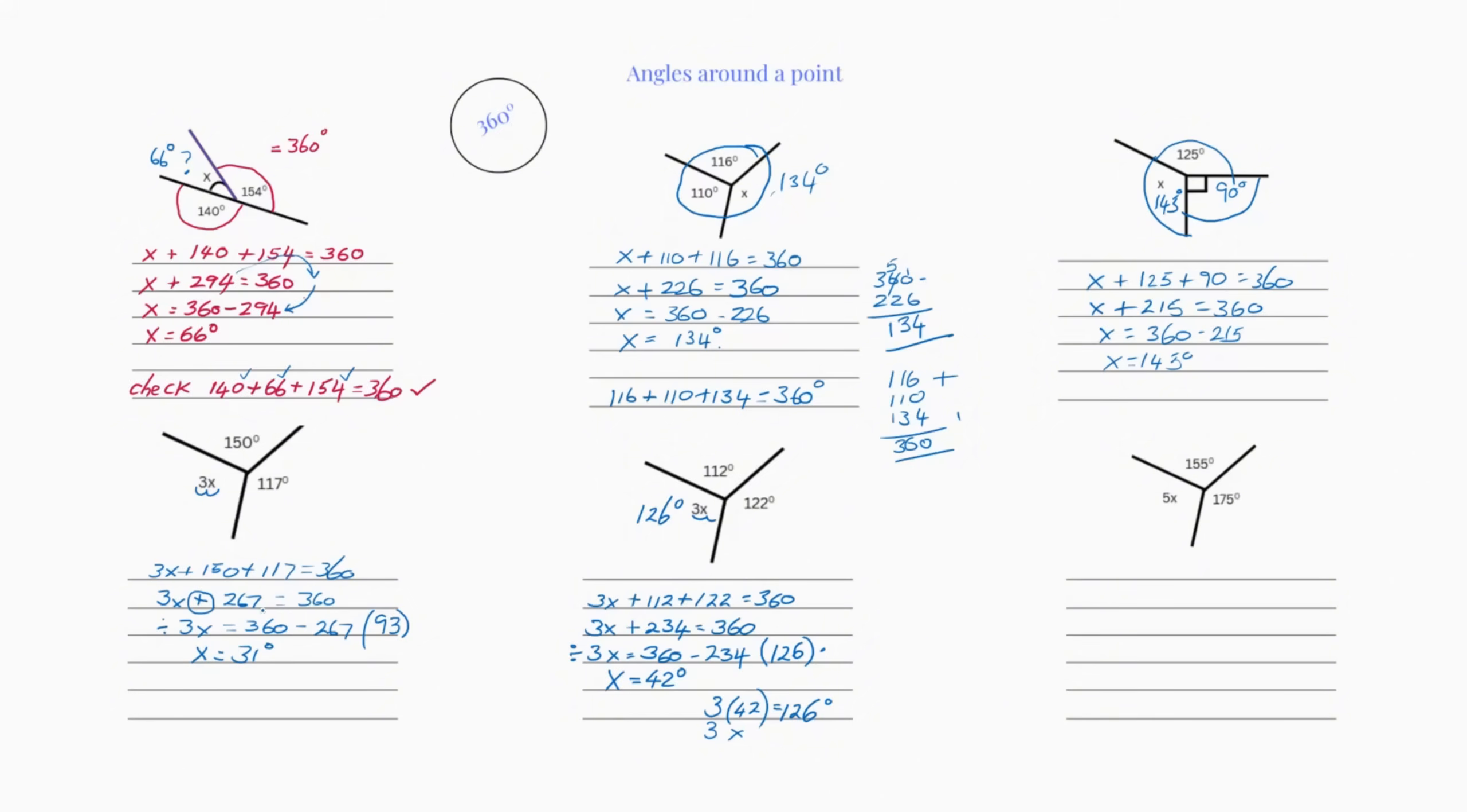Now we're going to divide our 3 into our 93 and that will give us 31 degrees. That's it, we found our x. But there's three lots of x's, isn't there? So we're going to do 3 times 31 equals 93 degrees. And remember, we can always check our answer by doing 150 plus 117 plus 93, which gives us 360.